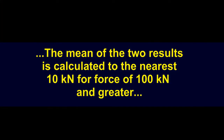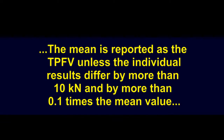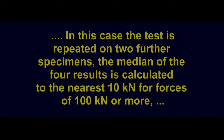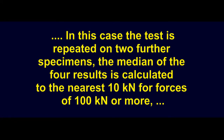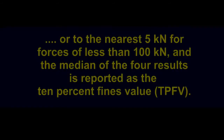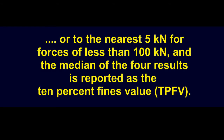The mean of the two results is calculated to the nearest 10 kN for forces of 100 kN or greater, or to the nearest 5 kN for forces smaller than 100 kN. The mean is reported as the TPFV unless the individual results differ by more than 10 kN and by more than 0.1 times the mean value. In that case, the test is repeated on two further specimens, and the median of the four results is reported as the 10% fines value (TPFV).